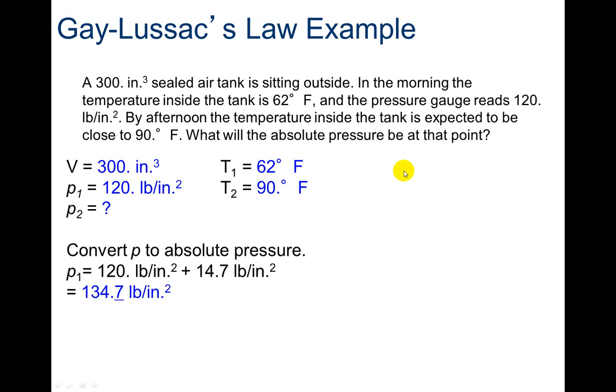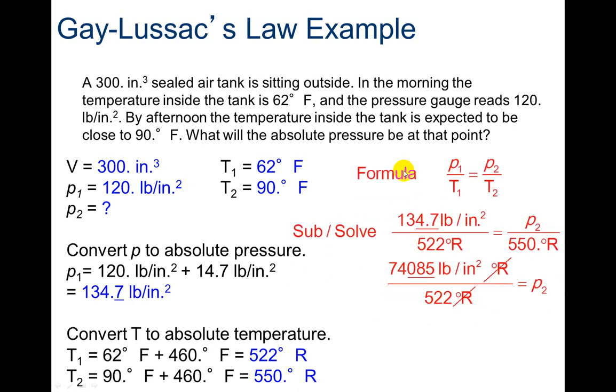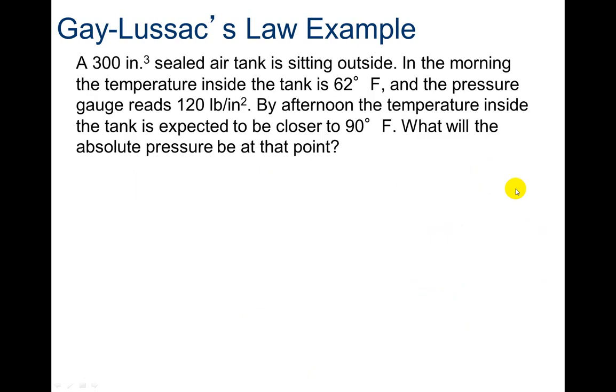Convert P to absolute pressure: 134.7 PSIs. We've got to convert our Fahrenheit to degree Rankine by adding 460. I'm going to plug those in. And so then my pressure is going to be now in that absolute pressure because the other one was. So it's 140 PSI.